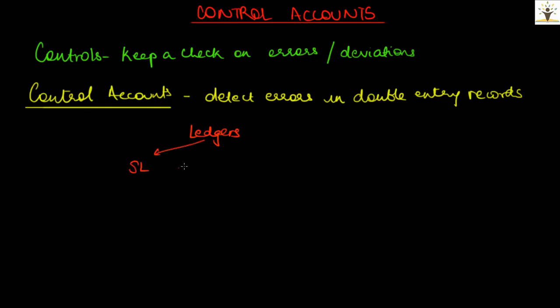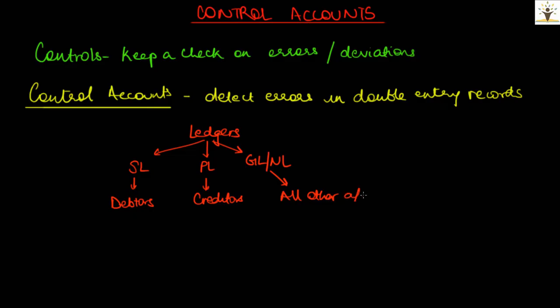Businesses usually maintain their ledgers divided into three categories as seen in an earlier video on ledgers. So there will be a sales ledger, a purchase ledger, and a general or nominal ledger. All the debtors accounts are maintained in the sales ledger, all the creditors accounts are maintained in the purchase ledger, and all other accounts will be found in the general or nominal ledger.